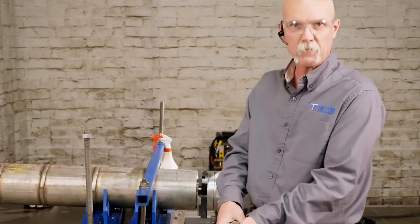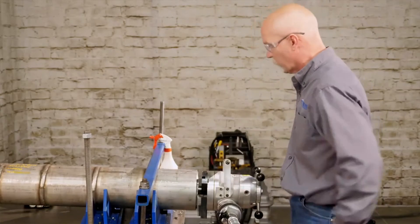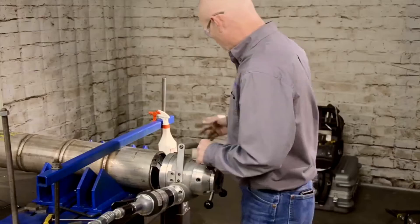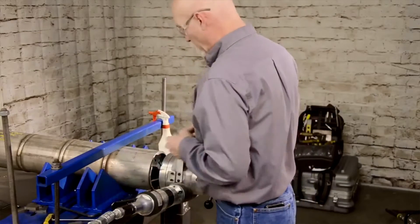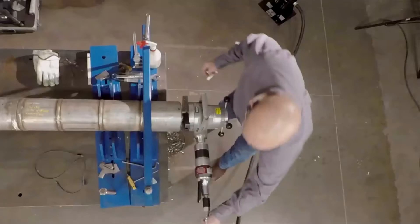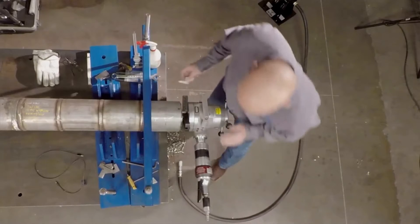Once you have the end of the pipe square to your length or your dimension you need, we're going to go ahead and put your counterbore bit in next. It goes face, counterbore, and then bevel.